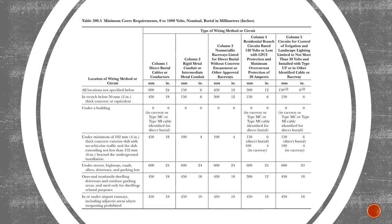Table 300.5 is called minimum cover requirements, 0 to 1,000 volts nominal, with burial depths in millimeters and inches. On the left-hand column, we see the location of wiring method or circuit. Below that, we have a variety of locations: all locations not specified below, in trench below 2-inch thick concrete or equivalent, under a building, under a minimum 4-inch thick concrete exterior slab with no vehicular traffic, and so on. The first step when using this table is to determine where the conductors are being installed.